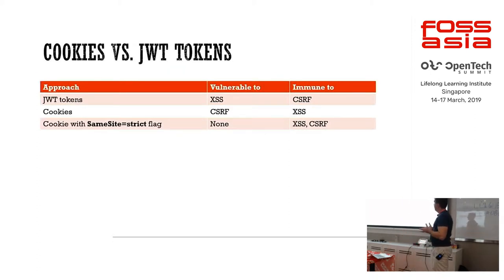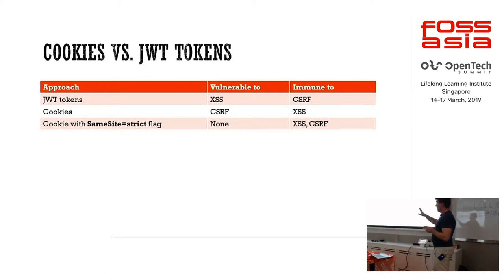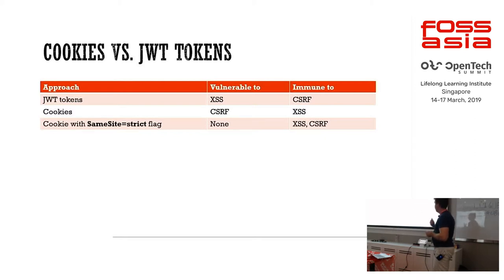Finally, this is a table where you can see different vulnerabilities and how to protect against them. It seems the SameSite cookie flag is widely adopted. I would probably recommend using cookies nowadays if you don't need to do anything on the client side — but make sure you use the SameSite flag, because then you're immune to CSRF as well.